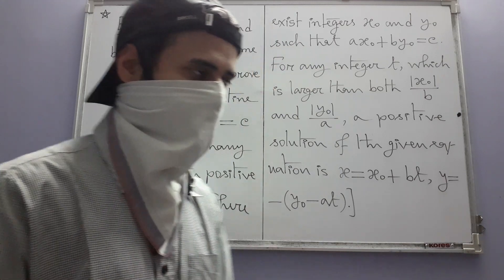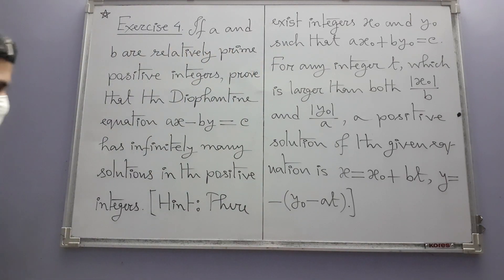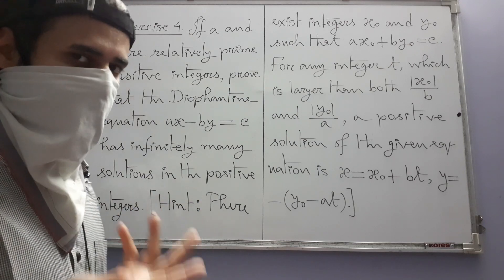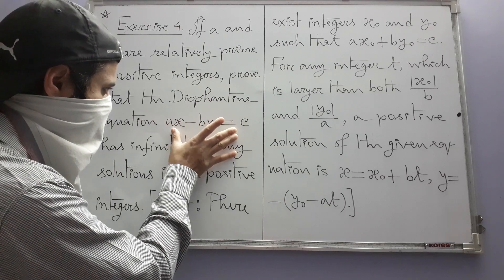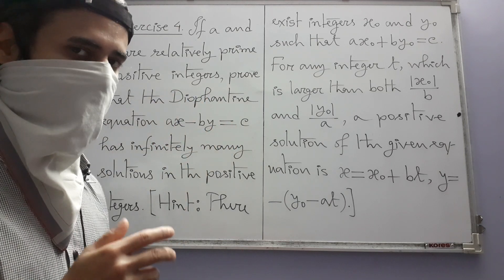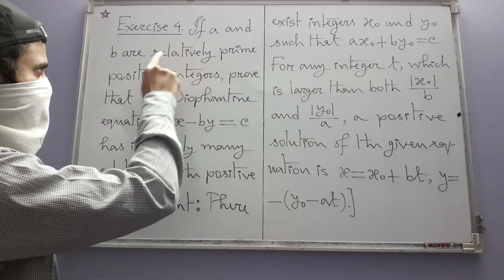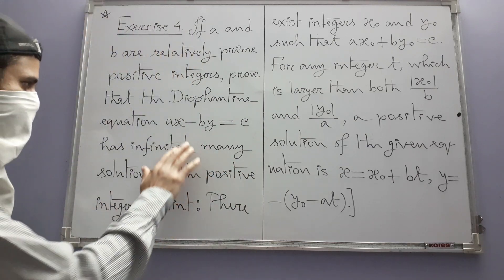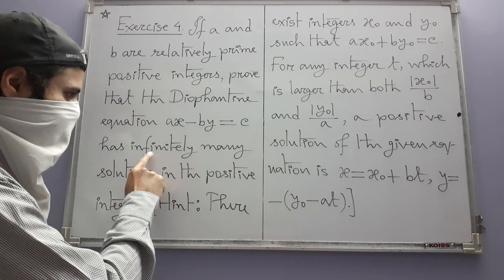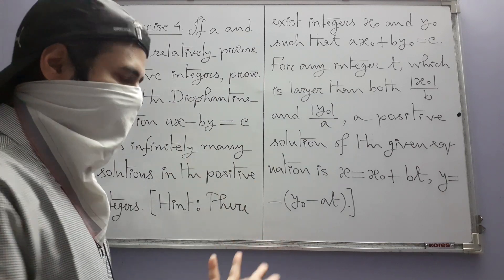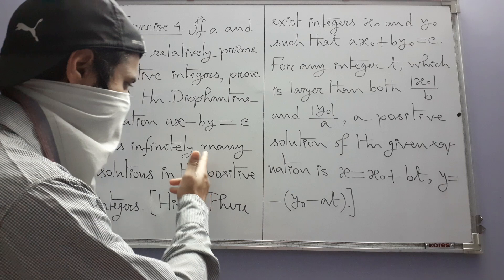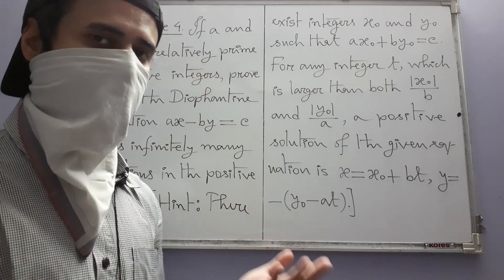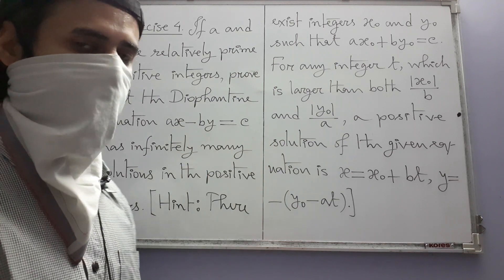The next one is Exercise 4, which is a bit general. We are given two positive integers a and b, and an integer c, for which we consider the Diophantine equation ax minus by equal to c. It is given that a and b are relatively prime, that is their greatest common divisor is 1. We have to prove this equation has infinitely many solutions in which both x and y values are positive — infinitely many solutions in the positive integers. A hint is given, and almost the entire solution is contained in the hint, so we are just going to follow the hint.